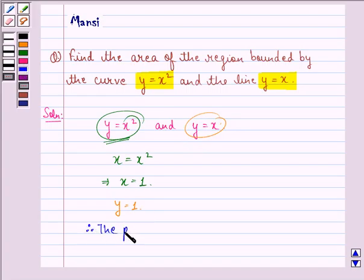Therefore, the point of intersection of the parabola y equals x square and the line y equals x is (1, 1).